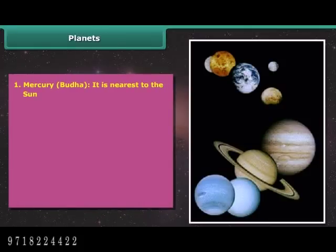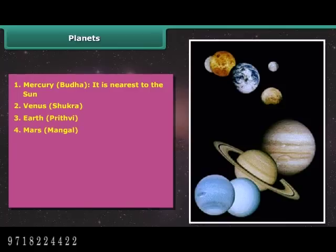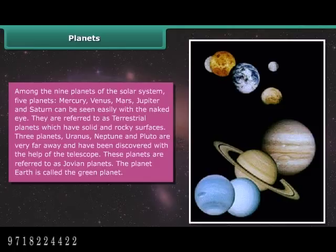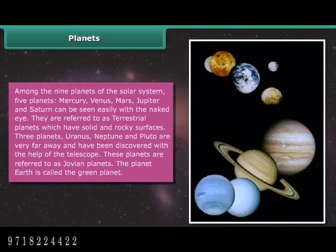The planets in order of increasing distance from the Sun are: Mercury, Venus (Shukra), Earth (Prithvi), Mars (Mangal), Jupiter (Brihaspati) — the biggest planet, Saturn (Shani), Uranus (Indra), Neptune (Varun), and Pluto (Yama) — the smallest planet and farthest from the Sun. Five planets — Mercury, Venus, Mars, Jupiter, and Saturn — can be seen with the naked eye and are called terrestrial planets. Uranus, Neptune, and Pluto, discovered with telescopes, are called Jovian planets. Earth is called the green planet.